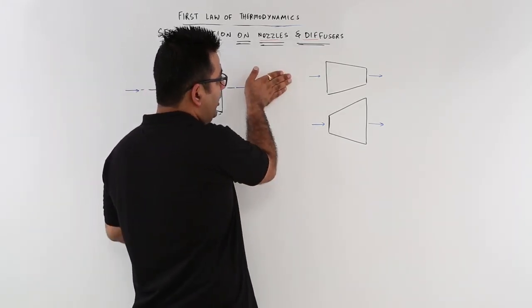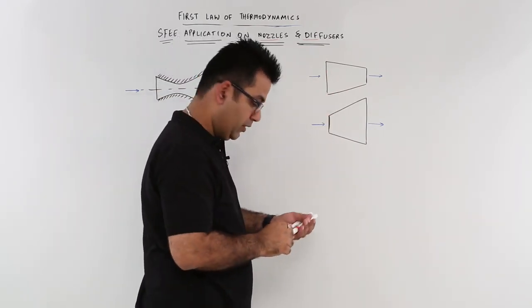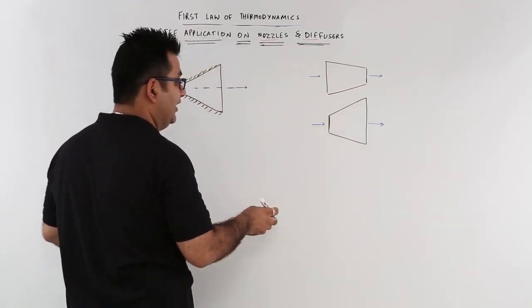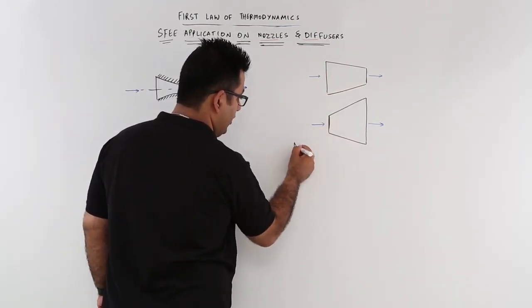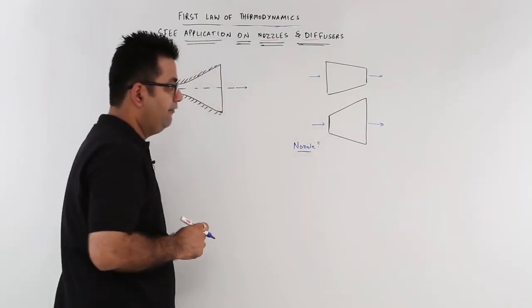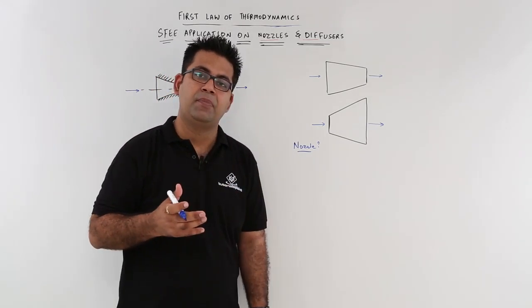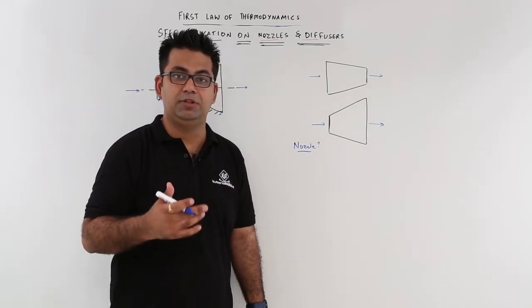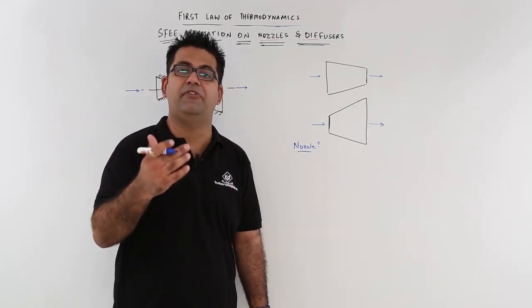You have some fluid entering and leaving in both cases. So first of all, what is a nozzle? A nozzle is a device which increases the velocity of a fluid at the expense of its pressure.